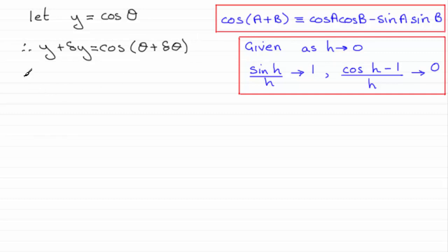Next I'm going to subtract y from both sides. So therefore I get delta y equals the cosine of theta plus delta theta minus y. And I'm going to now expand the cosine of theta plus delta theta using this identity here, which as I say you should be familiar with. And what we end up with is delta y equals the cosine of theta times the cosine of delta theta minus the sine of theta sin delta theta, where I'm just replacing the a with theta and the b with delta theta.